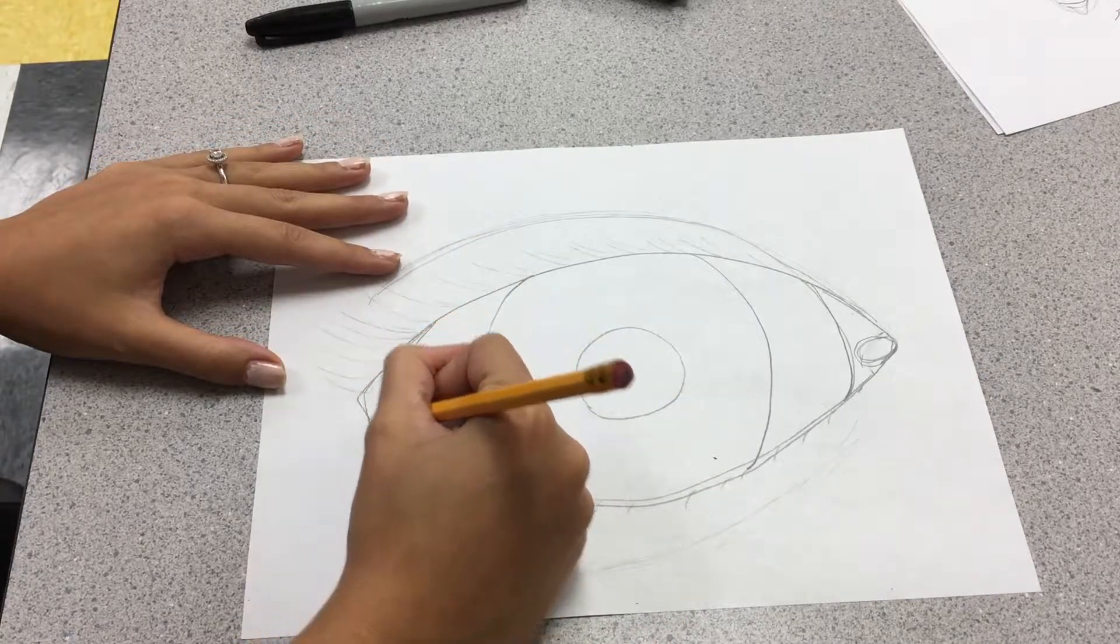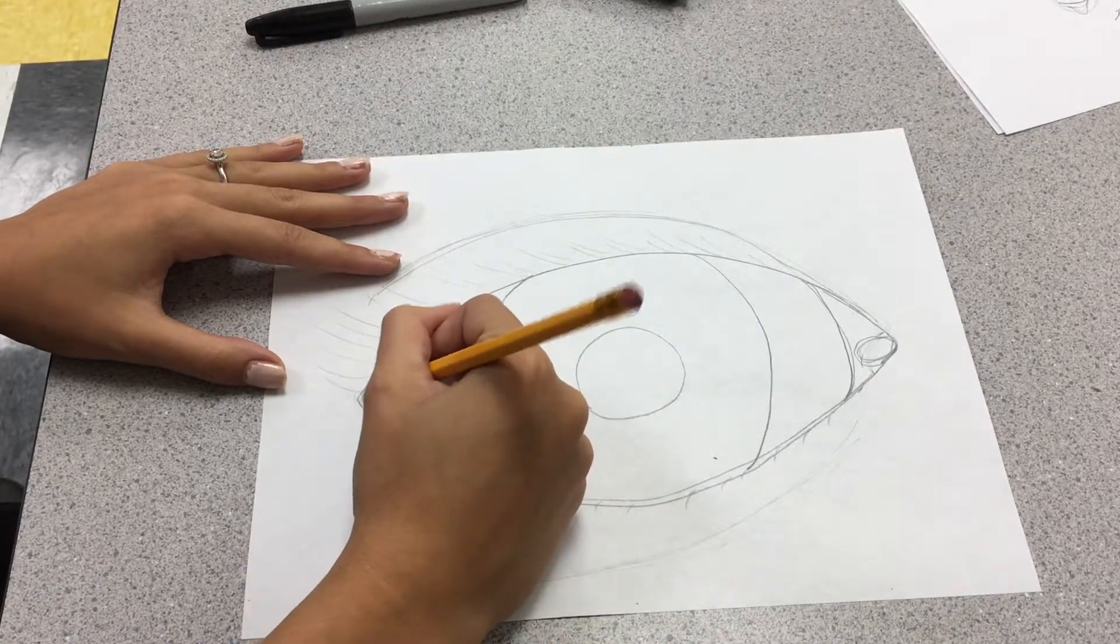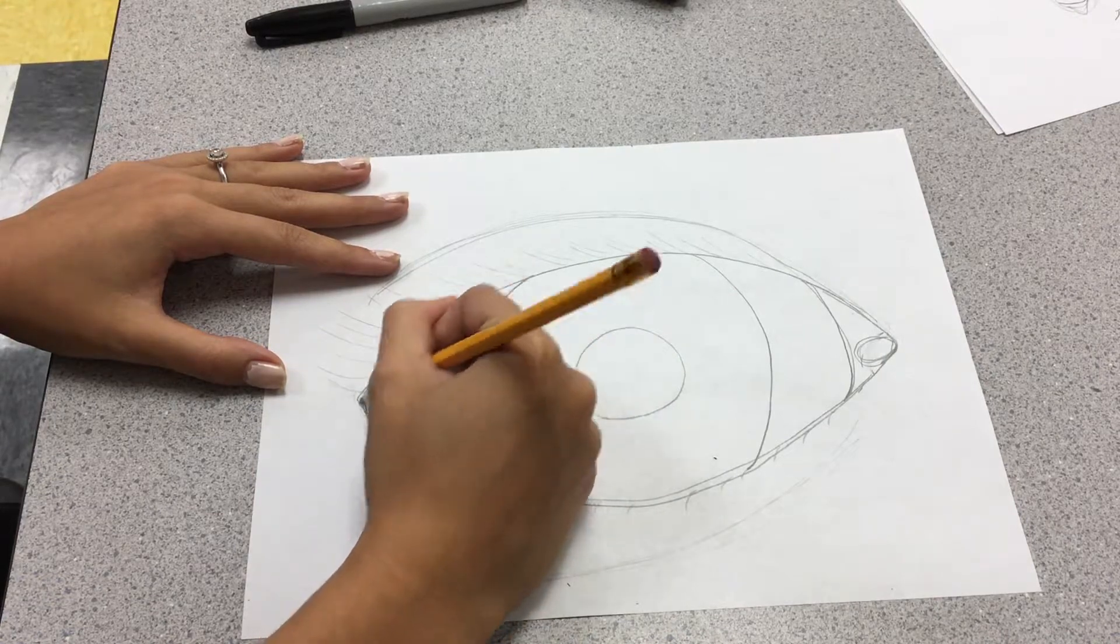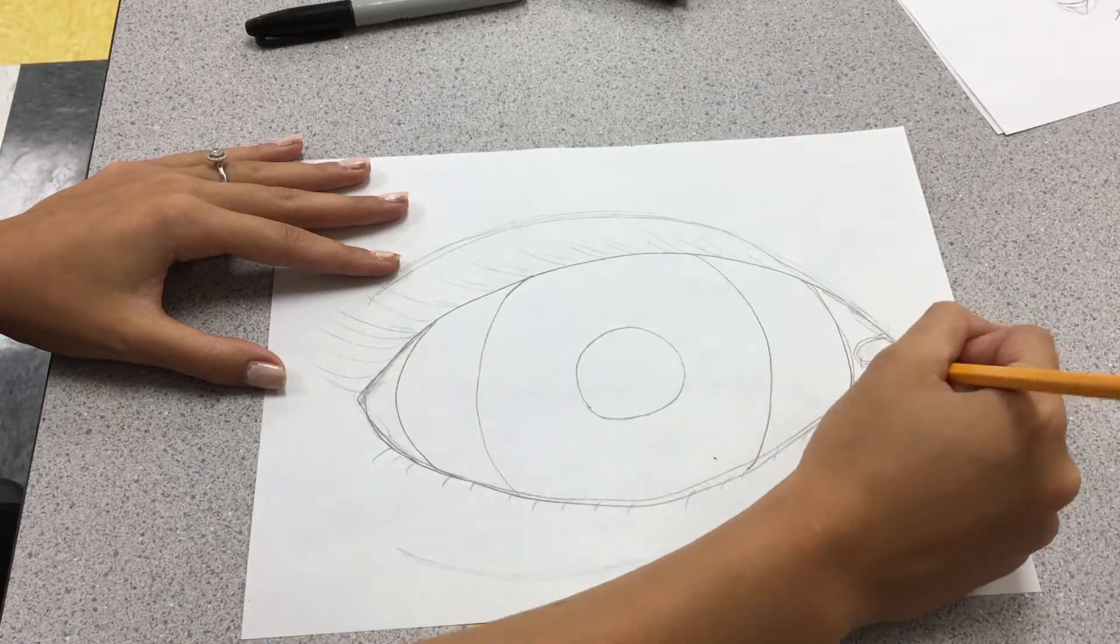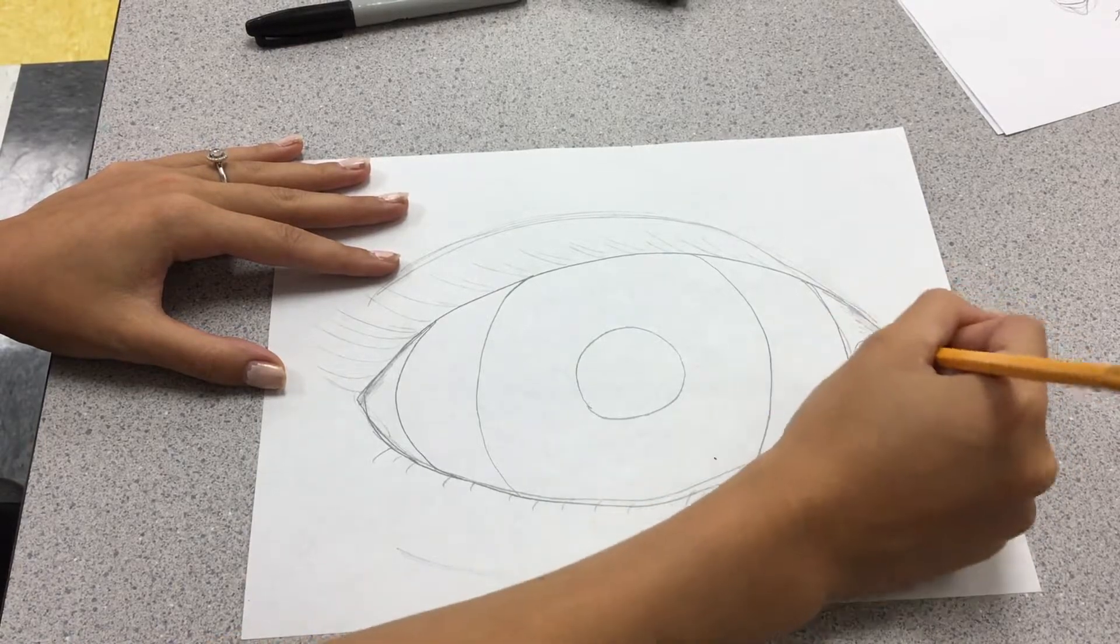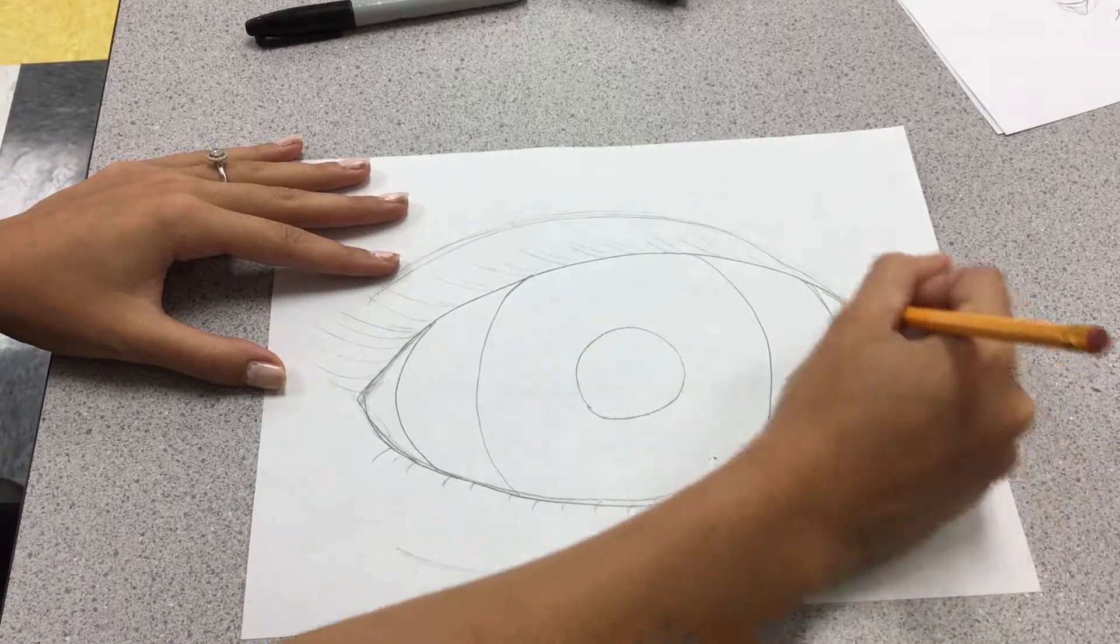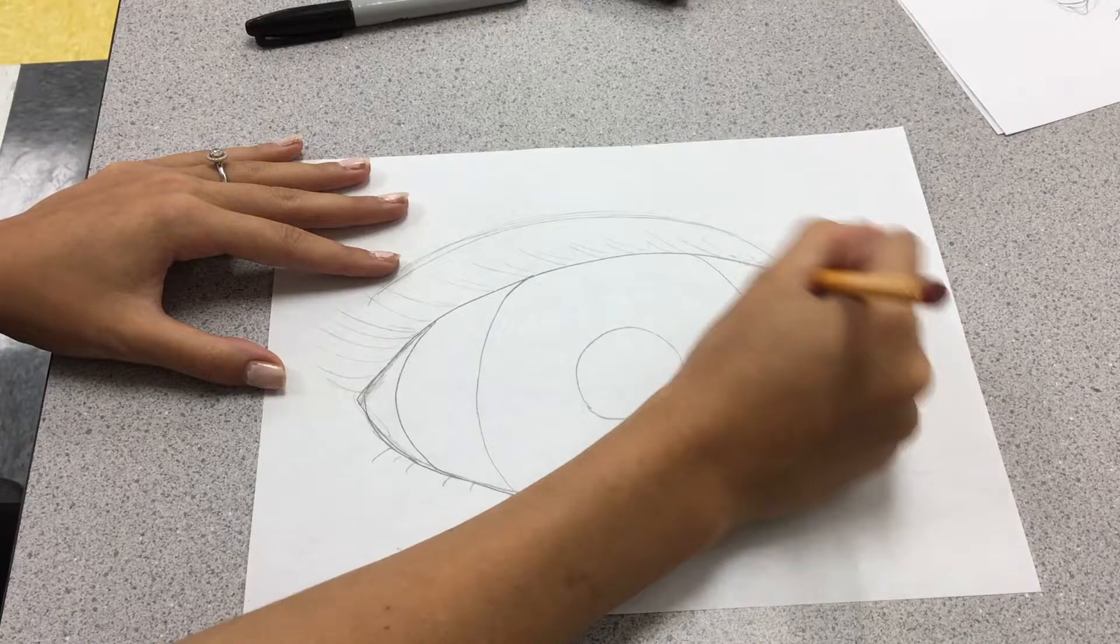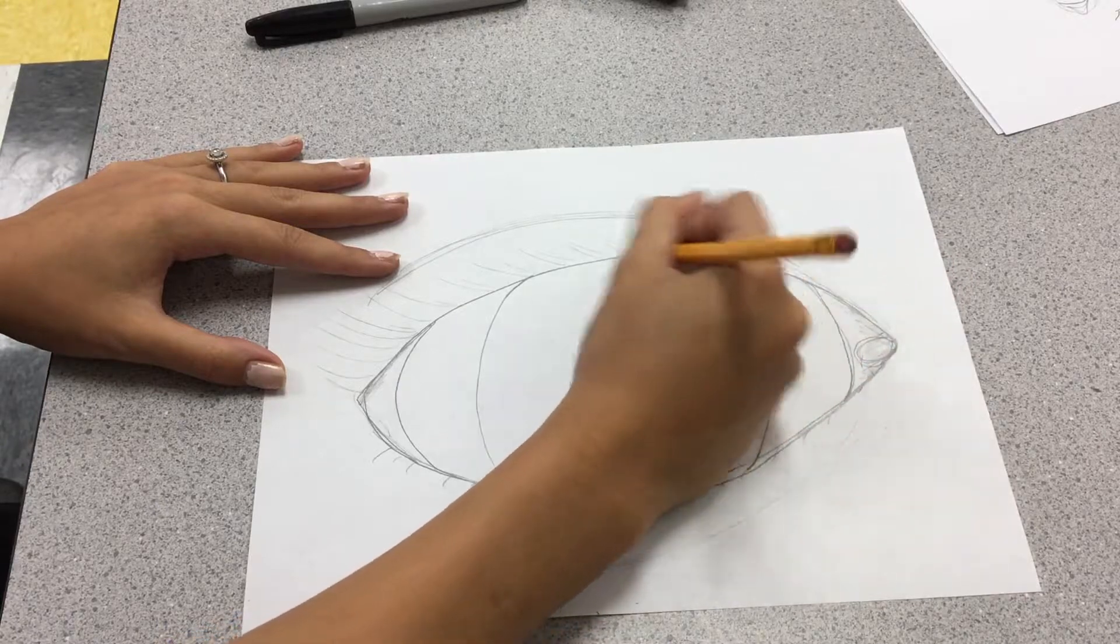If you want to add some more detail over here, you can kind of add a little bit of shading for the corners of your eyes. And we'll just go over with your pencil lightly. Kind of add some shading on the outside.